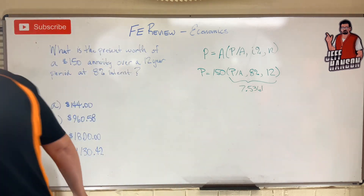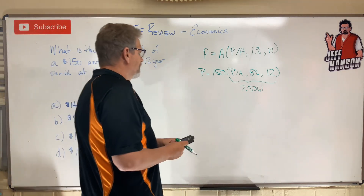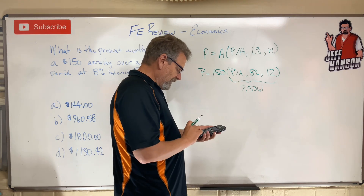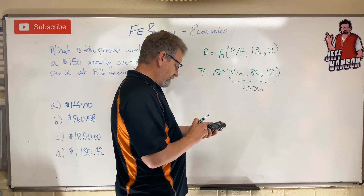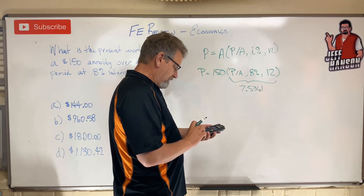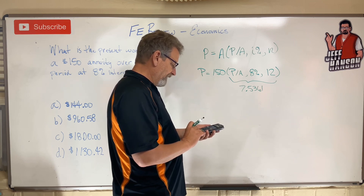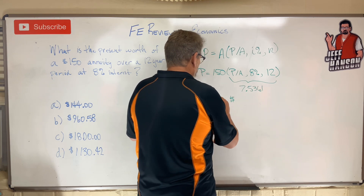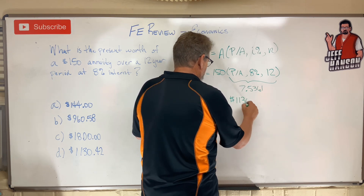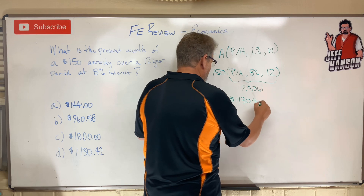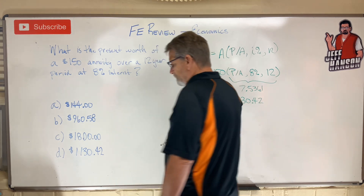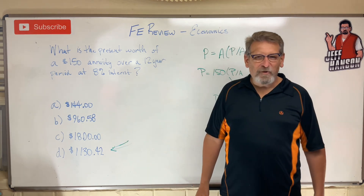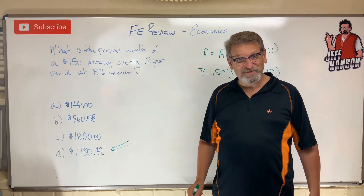7.5361. The answer is as simple as putting 150 times 7.5361 into my calculator. That comes out to P equals $1,130.42. The answer is D. I hope you're getting these right — see you on the next video.